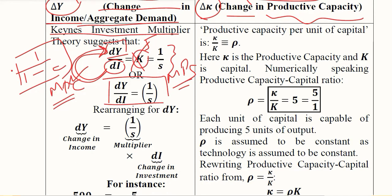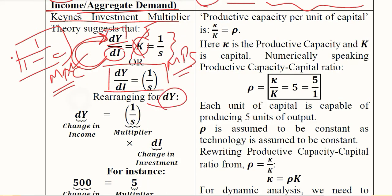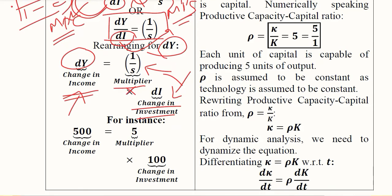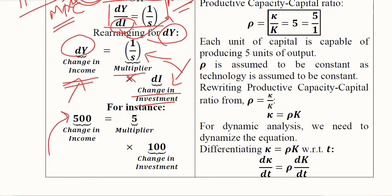Dropping the multiplier notation K, we carry the two sides that are more meaningful in terms of variables and parameters. Rearranging for dY, we extract the value of dY — the change in income — where the right-hand side is (1/s) multiplied by dI, the change in investment. Numerically, if the change in income is 500, there should have been an investment of 100 units which, when multiplied by the multiplier, gives 500. This is how the multiplier functions, and dI is the stimulus in the Domar growth model.